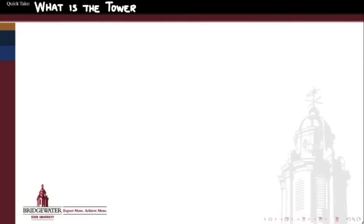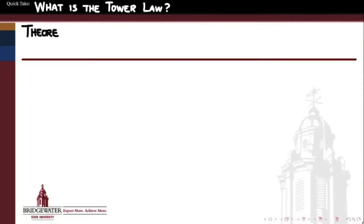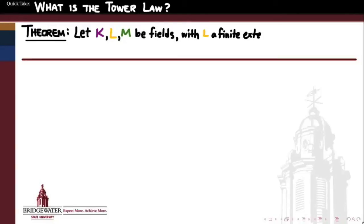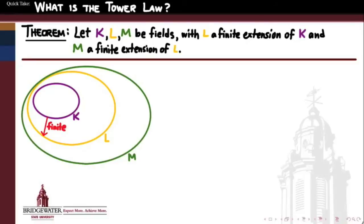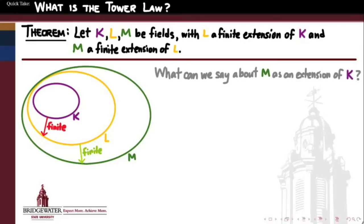One of the most powerful tools we have in building a splitting field is taking an extension of an extension, and the tower law tells us what happens when we do that. It says that if K, L, and M are fields, and L is a finite extension of K, and M is a finite extension of L, the tower law gives us insight into the structure of M as an extension of K — what is the relationship of the biggest extended field to the smallest base field?